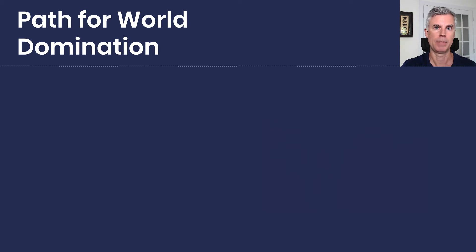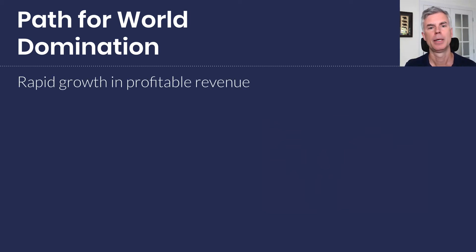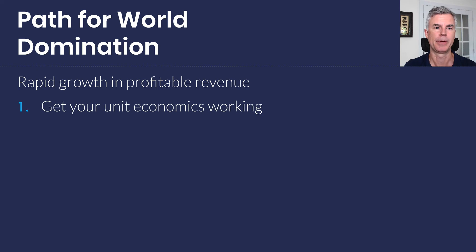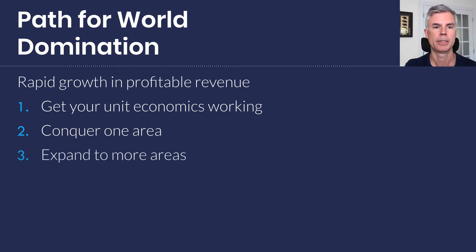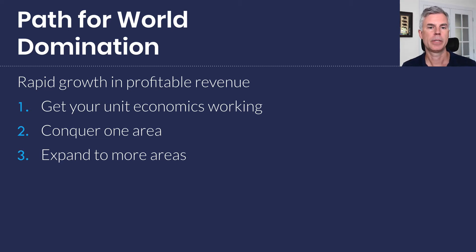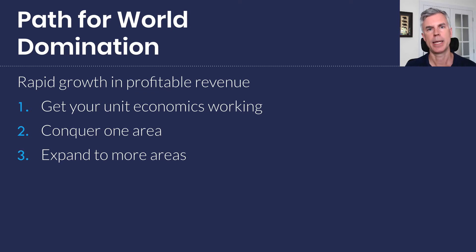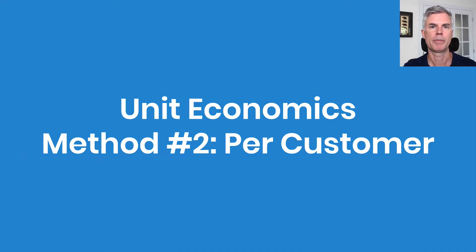Uber still needs to borrow money to succeed. The path for world domination is rapid growth in profitable revenue — Apple is a great example. The way to get there is to get your unit economics working, whether per unit or per customer. Conquer one geographic or virtual area, then expand. Even Facebook, which is all things to all people, got very good at converting college campuses — converting about 90% of students within weeks — before becoming universal. Even Facebook had to start with a niche.